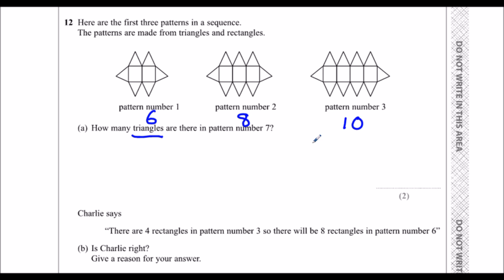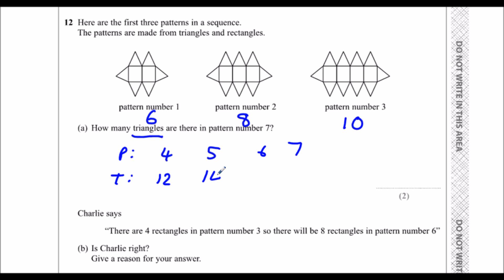We could just keep counting on. So, pattern 4, 5, 6, 7 — the triangles are going up by 2 every time. So it'll be 12, 14, 16, 18. Pattern 7 has 18 triangles.